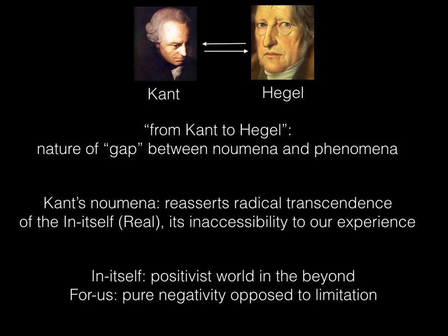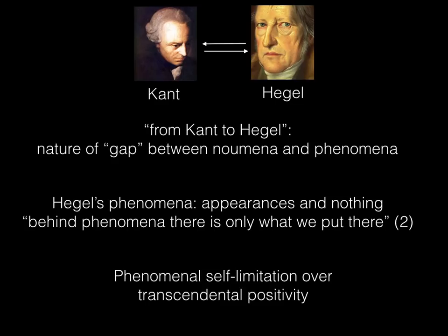Here we have a division where ultimate logical positivity is in the secular world beyond—the in-itself independent of our experience—and we have the for-us, which is a pure negativity in the sense that we want to know the in-itself of reality but have no access to it. The antinomies of reason are produced on our side, internal to our sphere of knowledge, since the noumena are in themselves non-contradictory, simply sustaining the appearances. Kant leaves us with an unresolvable negativity.